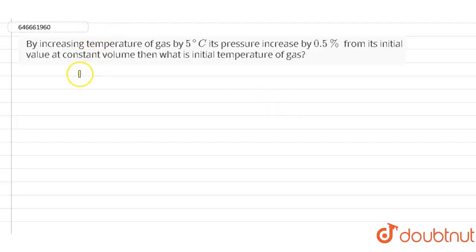So guys, here in this question it is given that by increasing the temperature of the gas by 5 degrees Celsius, its pressure increases by 0.5 percent from the initial value at a constant volume. Then what is the initial temperature of the gas?